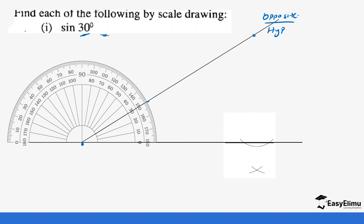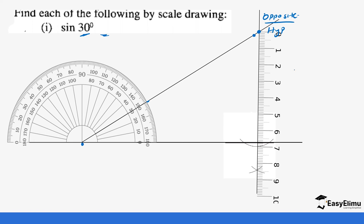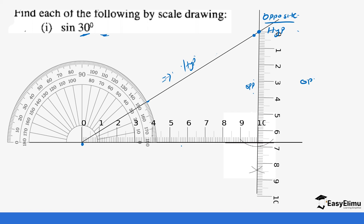You place your compass on a certain point on this line and make an arc to form a perpendicular bisector from this point to the line. You measure this line to get the value of the opposite side. Remember, we were given the hypotenuse, so when picking the point to create the perpendicular bisector, we already had the hypotenuse value. After that, you measure the adjacent side. If you divide the opposite by the hypotenuse, you notice it gives you sine 30.